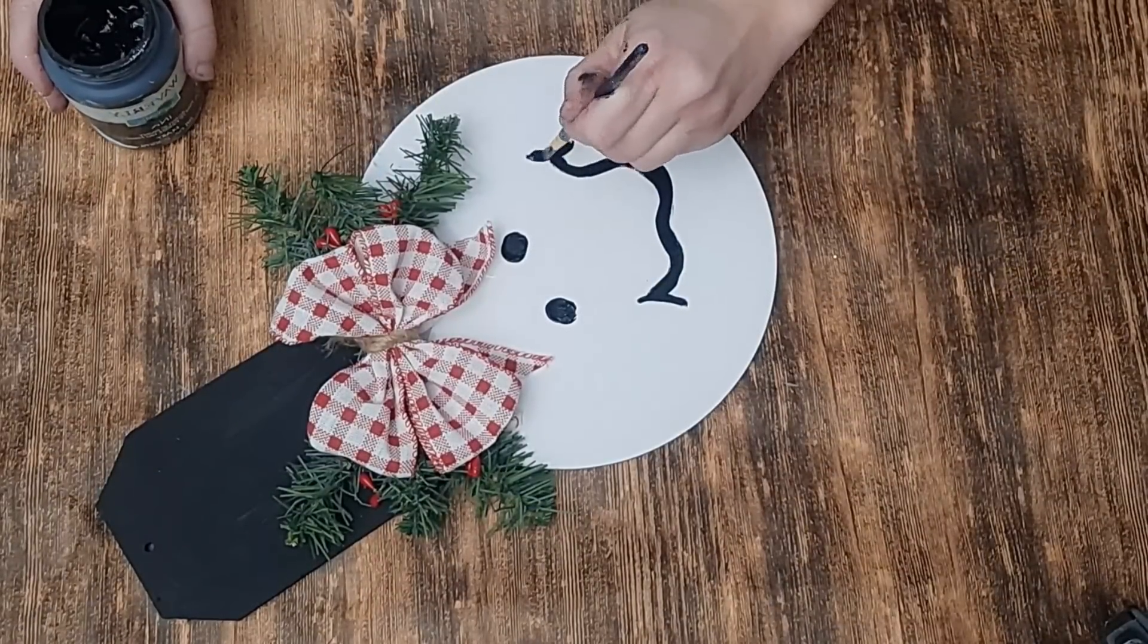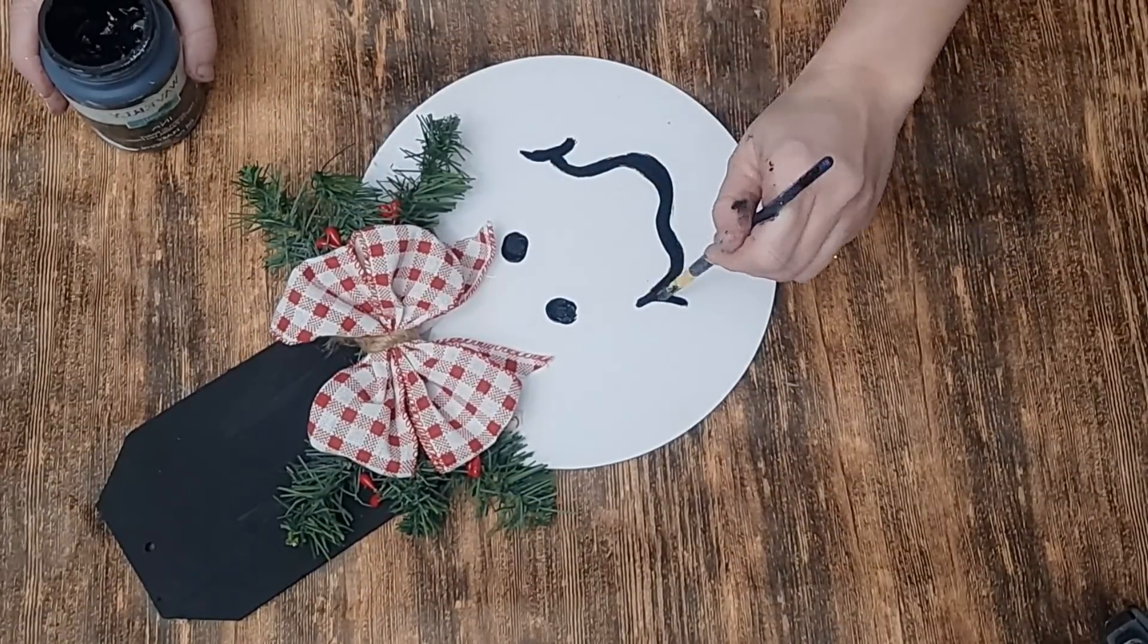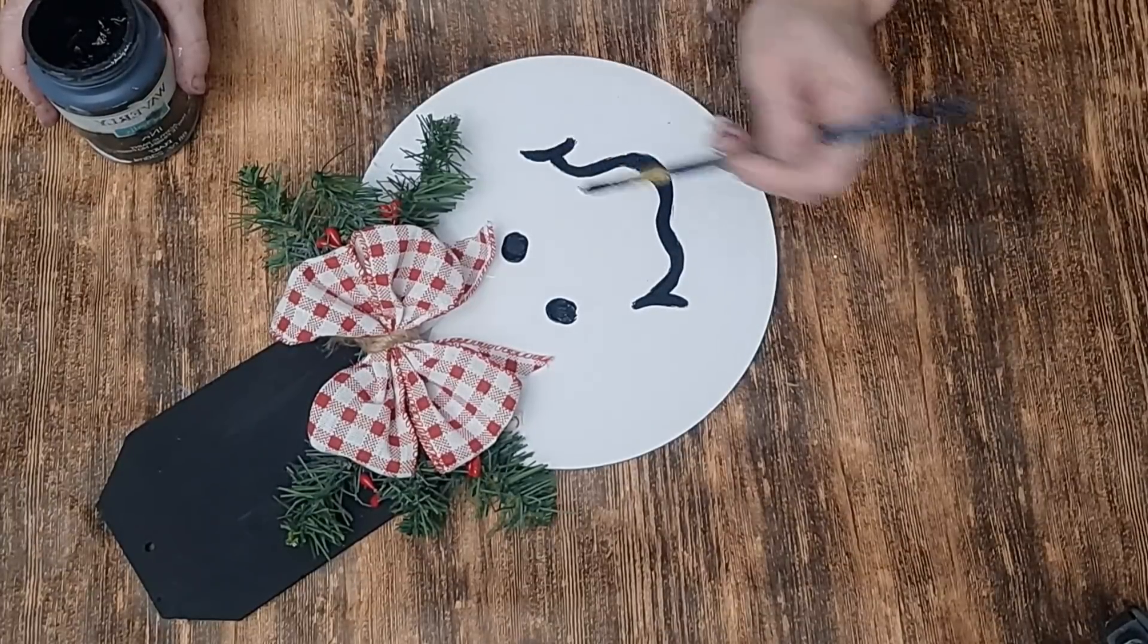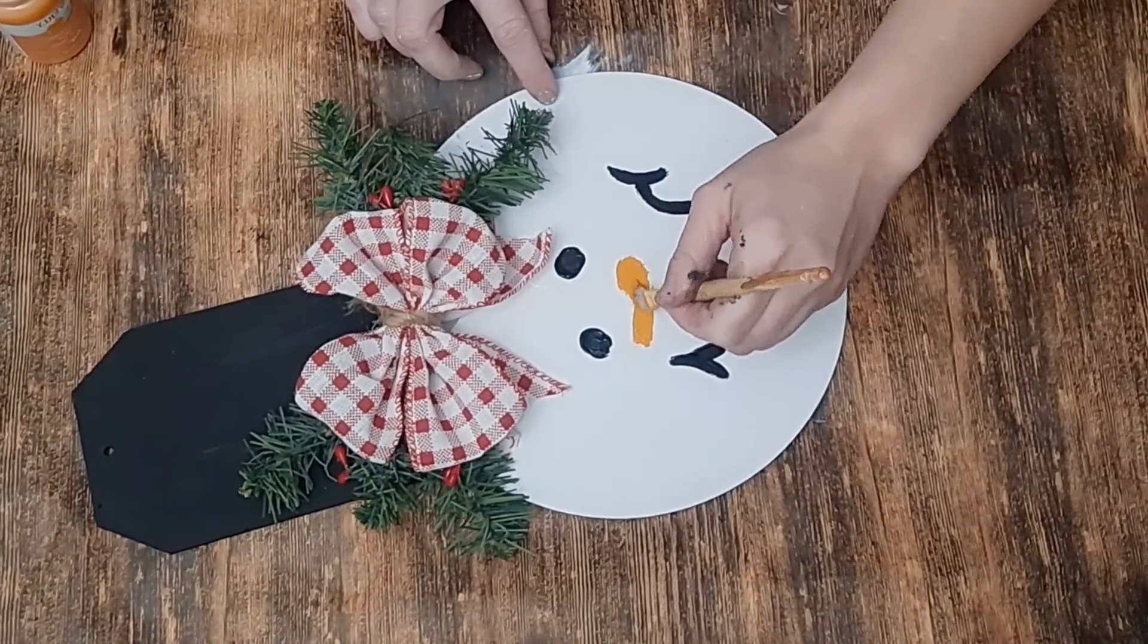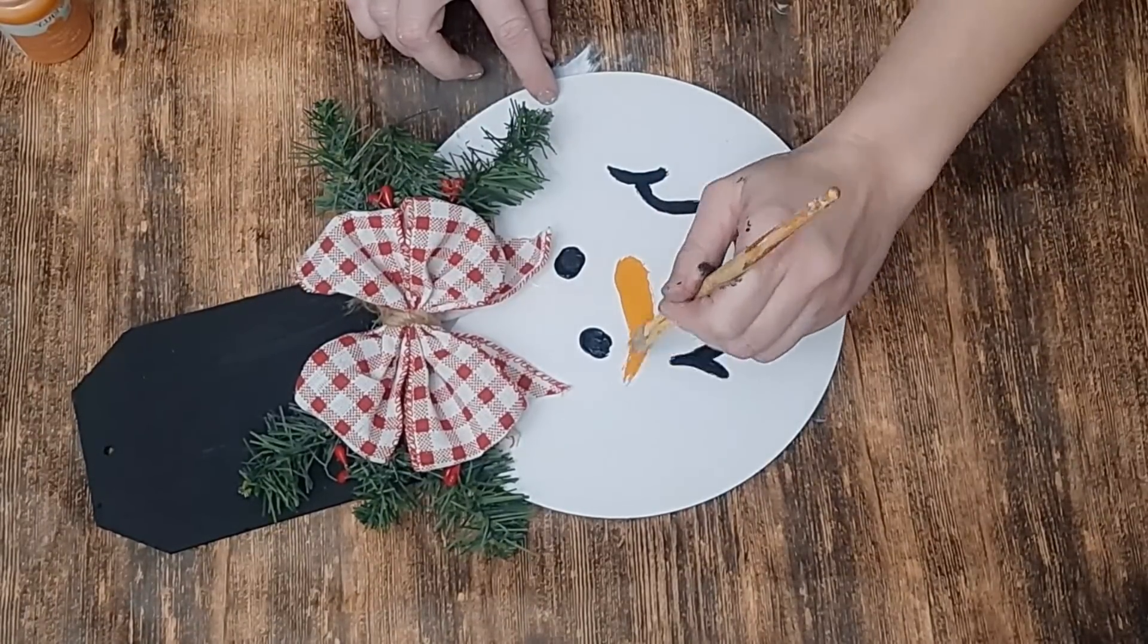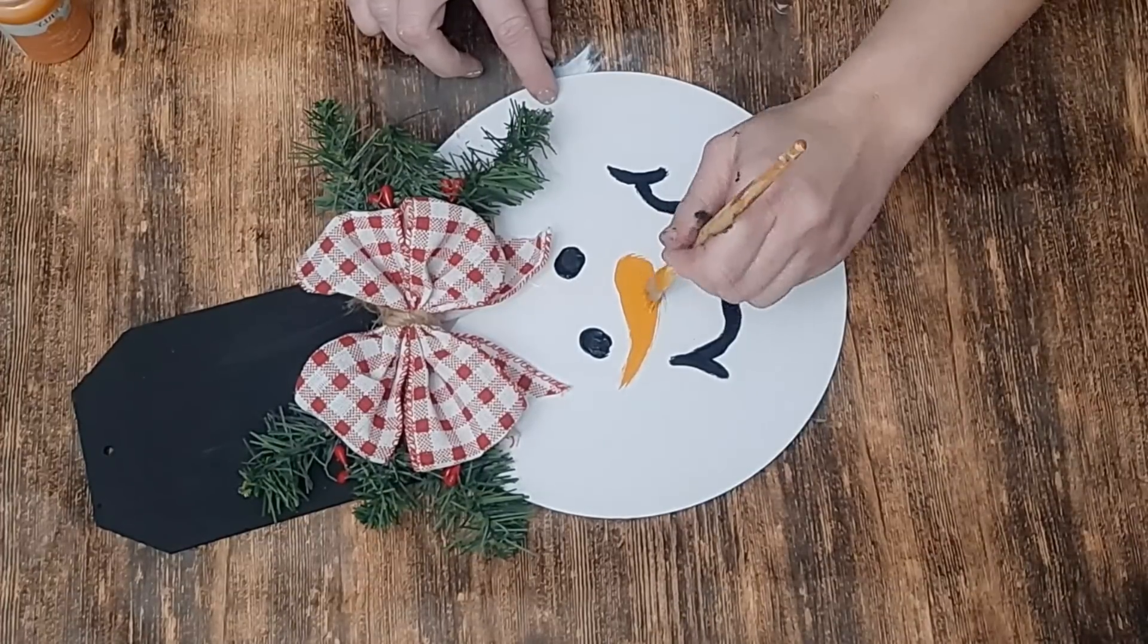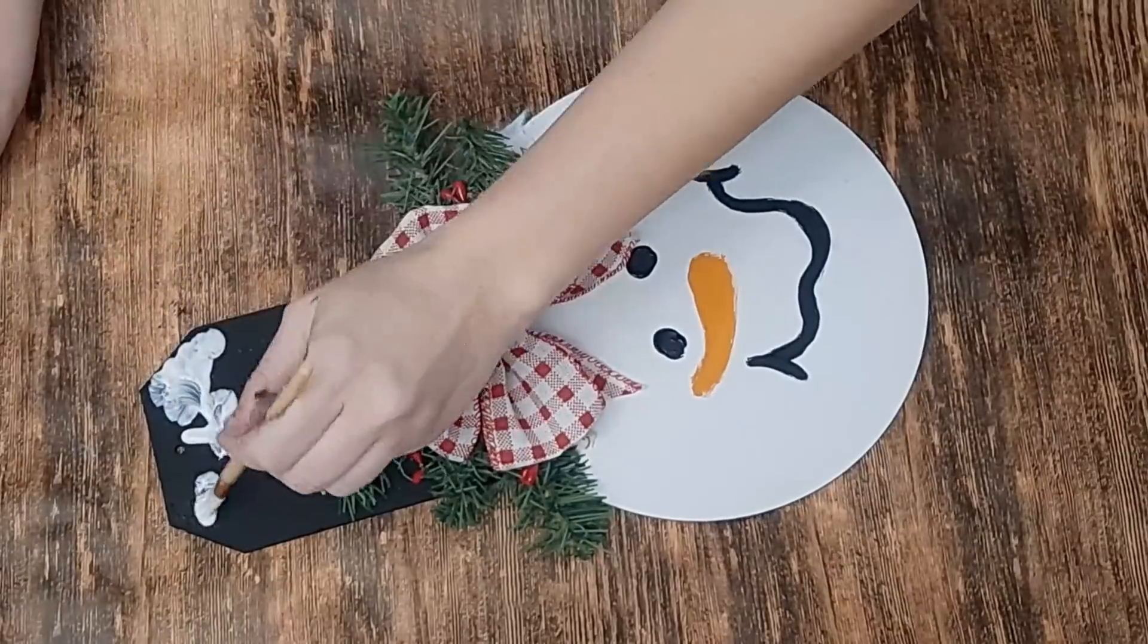Now I'm going to paint a face on my snowman using Waverly Ink chalk paint, creating eyes and making kind of a zigzag mouth, but you can do whatever type that you like. And then I just used Waverly pumpkin chalk paint to create my little crooked nose. I think this is so adorable.